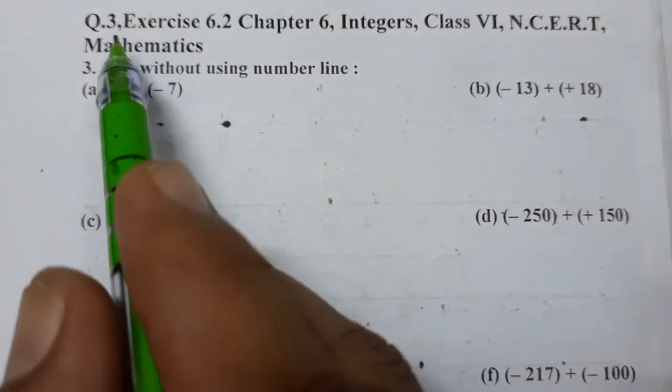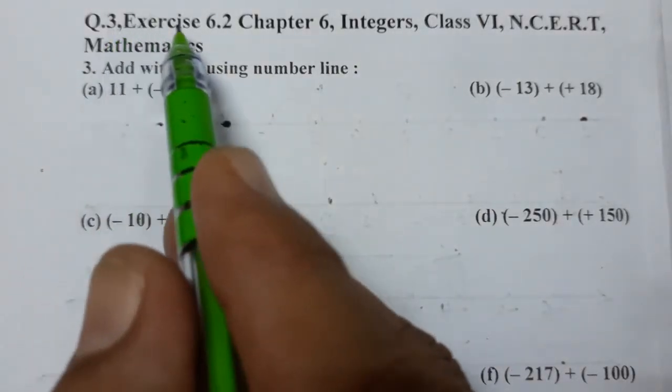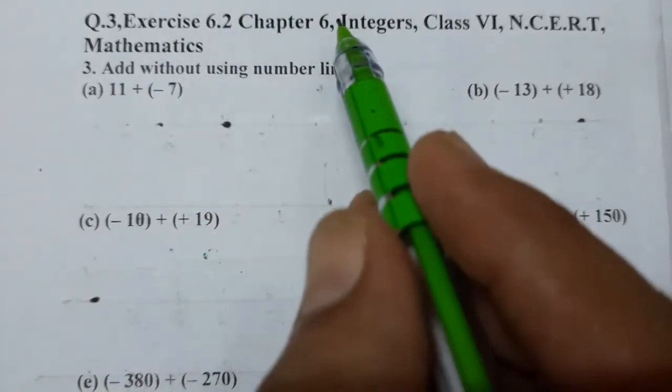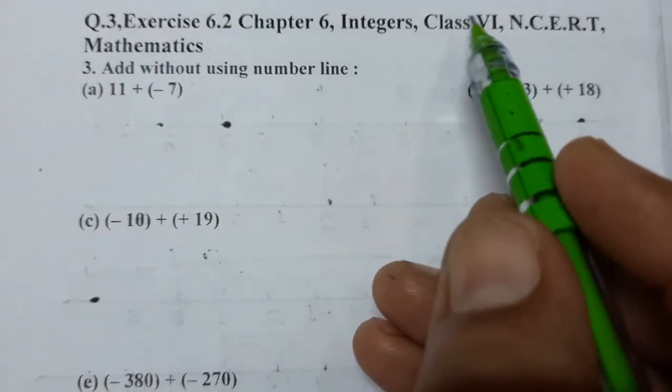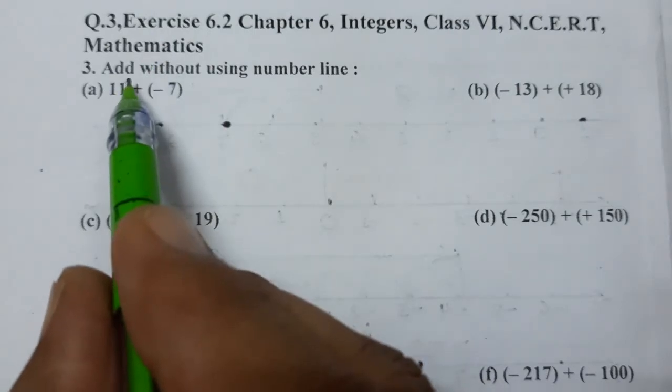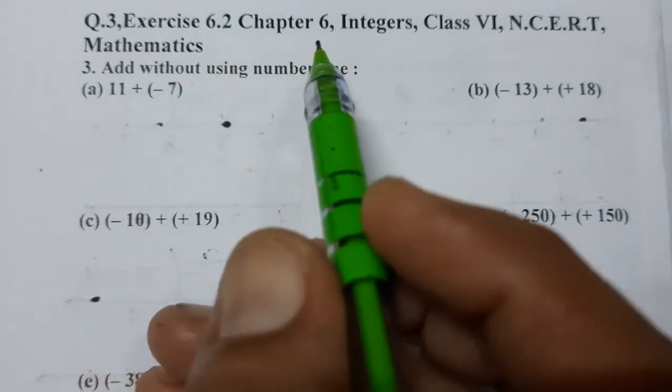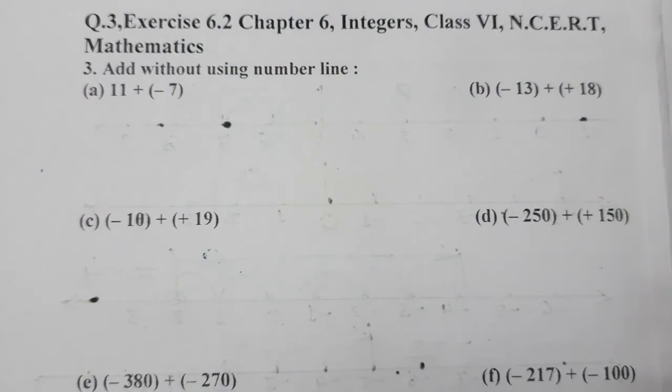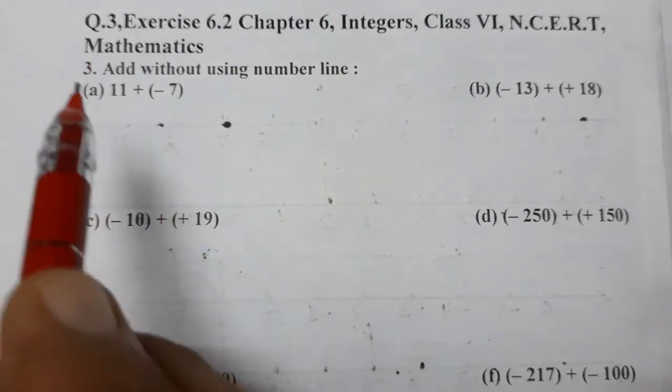Hello students, today we are going to do question number three of Exercise 6.2, Chapter number six, Integers, Class 6 Mathematics. Add without using number line. Now without using number line we have to add this, so let's see.